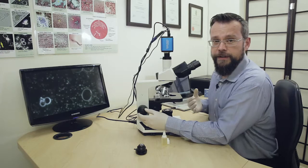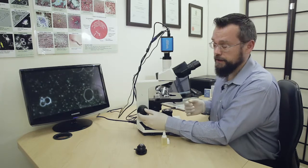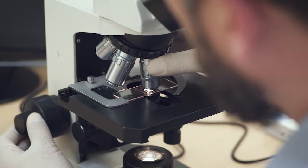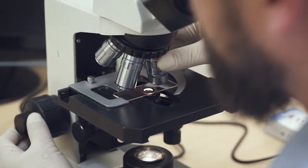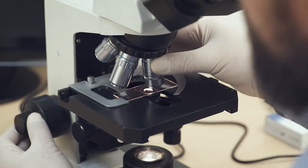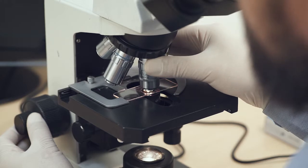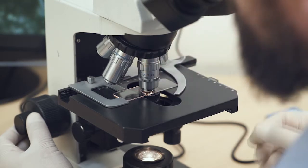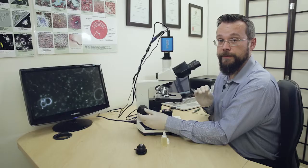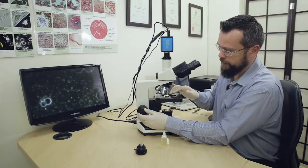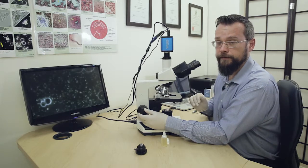In some cases if you find that initially you're not able to see anything with the 100 times objective, you can move the objective out of position slightly and move it back. This ensures that the oil forms a thin film between the bottom of the objective and the top of the sample.